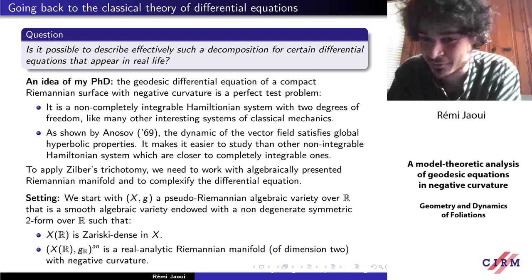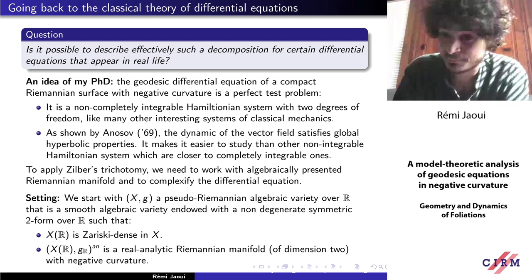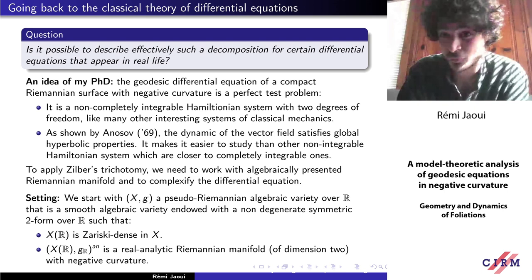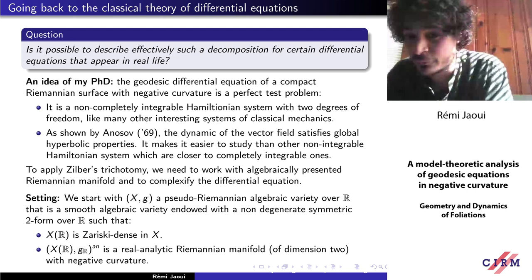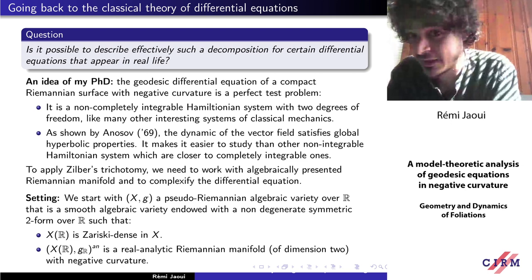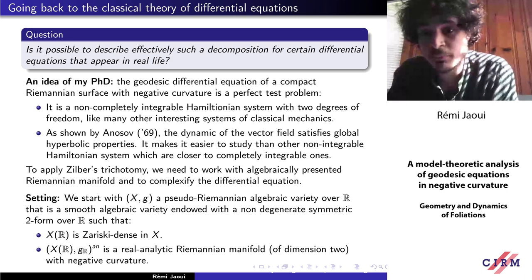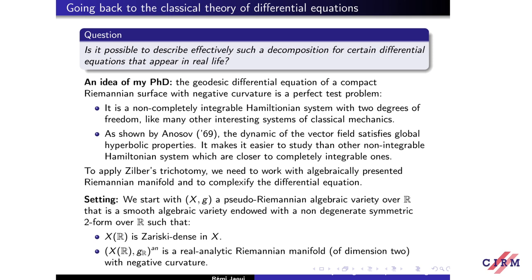You start with a smooth algebraic variety defined over R, thought of via its complex points. On it you have a non-degenerate symmetric two-form also defined over R, and you look at the real points — a real analytic Riemannian manifold of dimension 2 with negative curvature. To make everything compatible, you need to assume that the real points of X are Zariski dense in the variety.